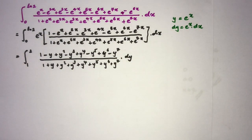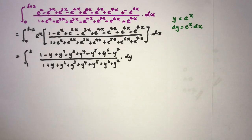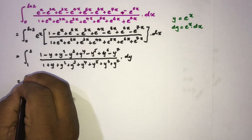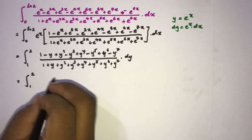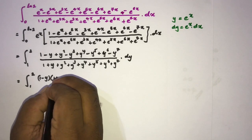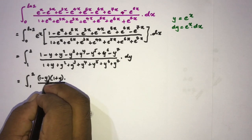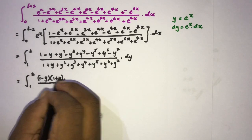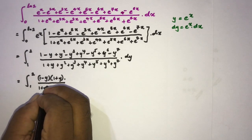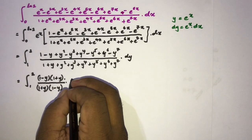Now we need to find the factors — this is the difficult part, but we can use a trick. I am going to multiply and divide by the quantity (1 minus y)(1 plus y). Writing 1 plus y first, then 1 minus y.